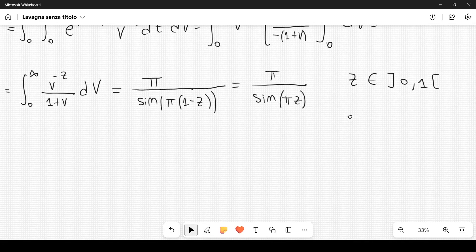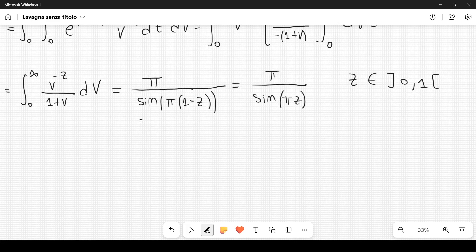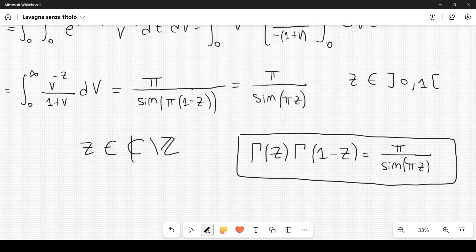But let me tell you that this formula can be analytically continued, such that z belongs to the complex numbers minus the integers. So the formula that we have derived is gamma of z times gamma of 1 minus z equal to pi divided by the sine of pi z, and this is called Euler's reflection formula.